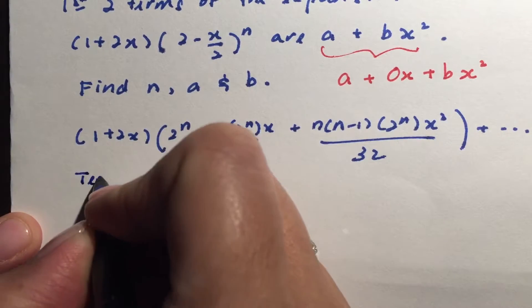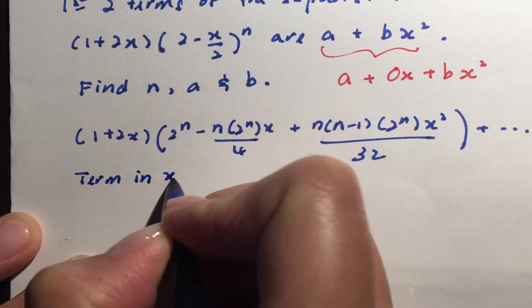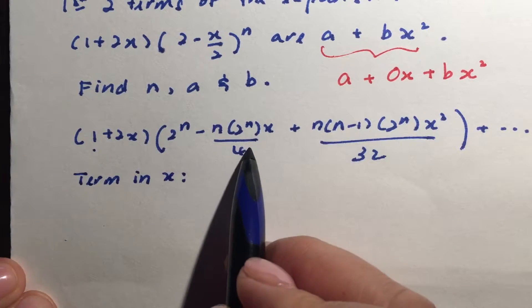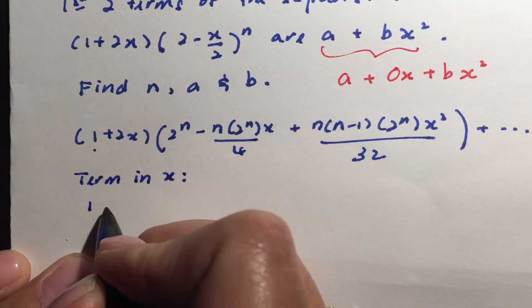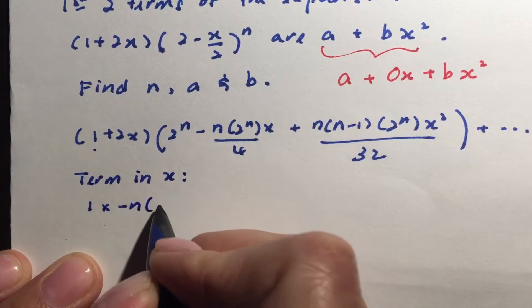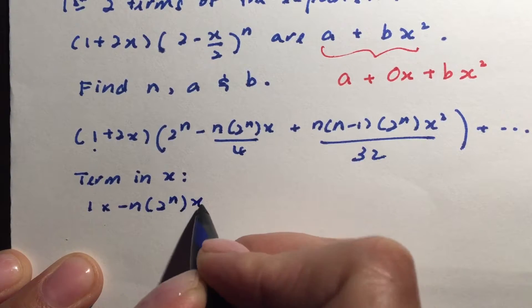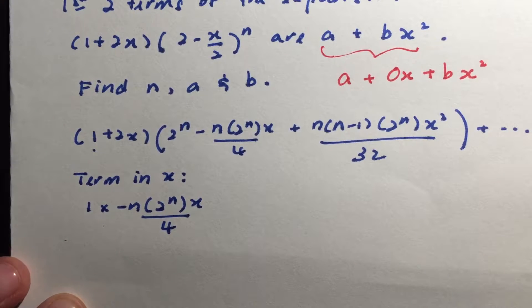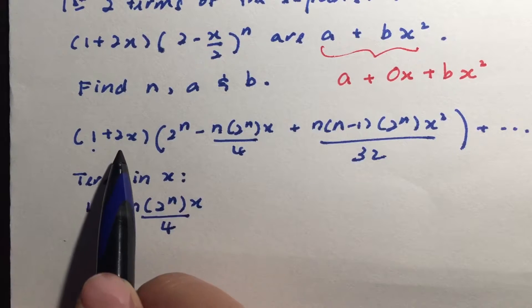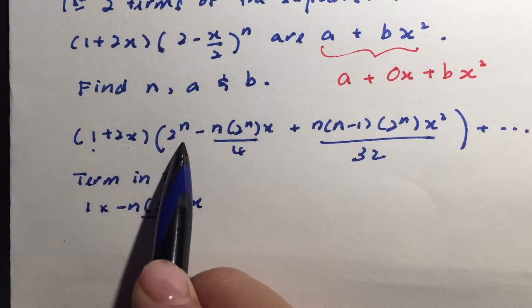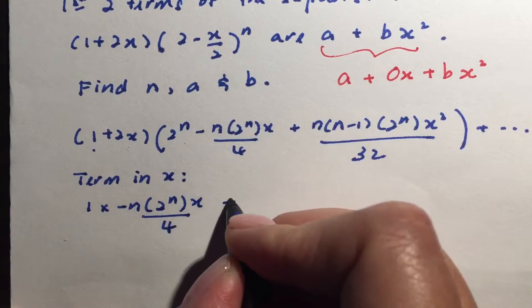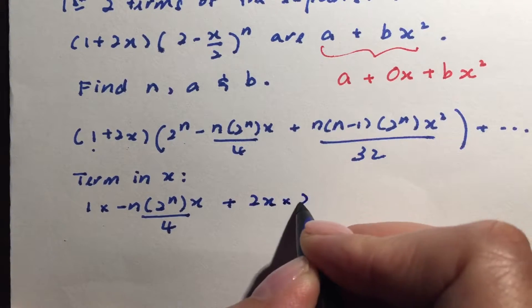So I'm going to find term in x. So in other words, I have constant times this. So I will have 1 times negative n to the power of n x over 4. This is one of the terms that will give me the term in x. Now, I will have another term in x. Can you spot it? This is an x term. This is a constant term. So I will be able to multiply these two. I'll be able to get it as 2x times 2 to the power of n.